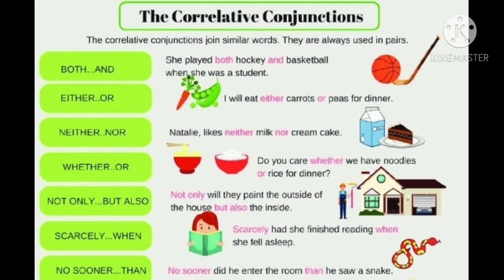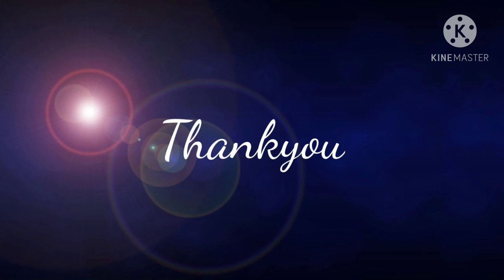Now let's use these in sentences. She played both hockey and basketball when she was a student — here we have used 'both...and' as a pair. Second: I will eat either carrots or peas for dinner. Similarly, you can go through the other sentences. With this, children, I have completed your conjunction part. Thank you.